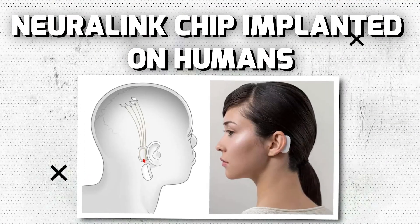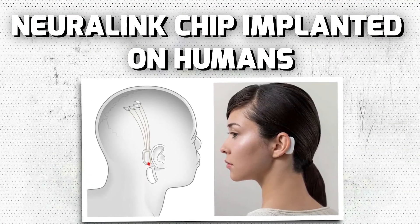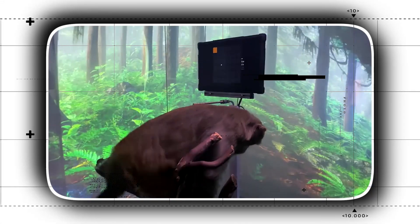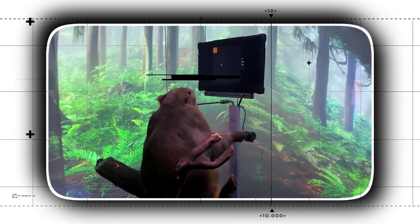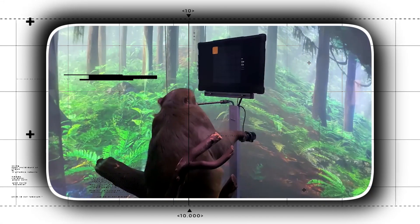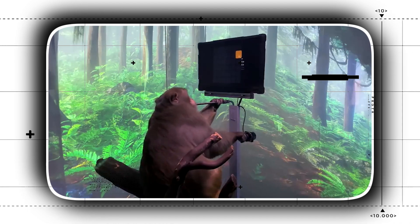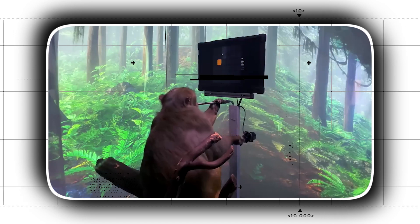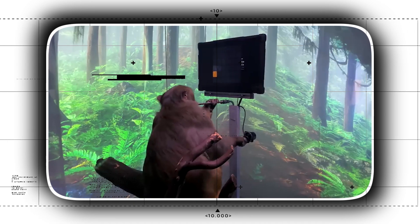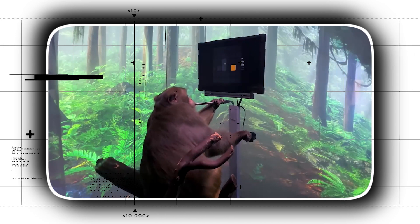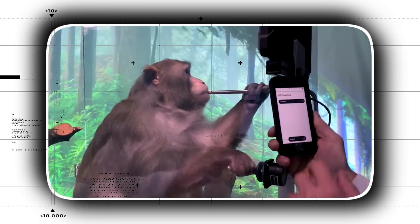Neuralink chip implanted on humans. This is insane. Pager, the first ever monkey in history to play a ping pong game, not just ping pong, but also with the help of a joystick. Pager was able to click on spots on the screen for a treat of yummy banana shake. You'll be amazed to know that Pager played ping pong just by thinking and used a common joystick too.